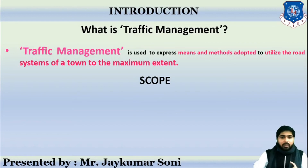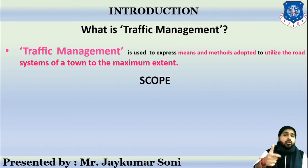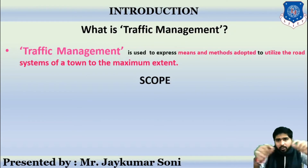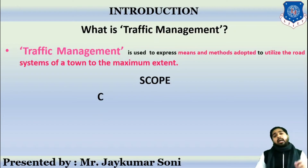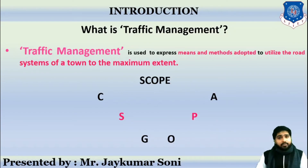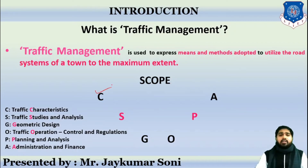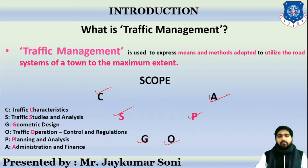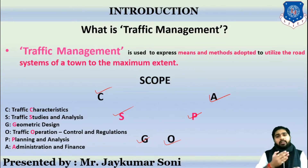Now let us discuss about scope. Here, scope means what are the aspects up to which this subject is limited — which aspects you are supposed to learn. Scope does not mean future opportunity; it stands for the boundary of the subject. The scope of traffic engineering and management can be remembered with the shortcut mnemonic CSGOPA, and can be explained with six parameters.